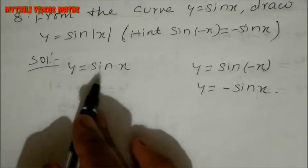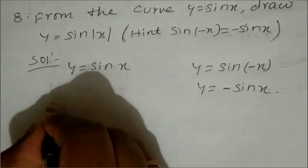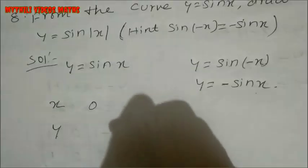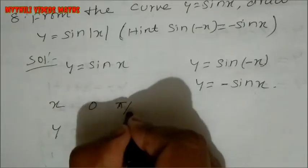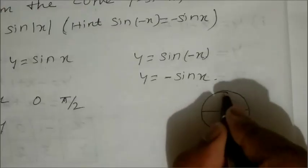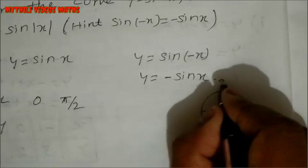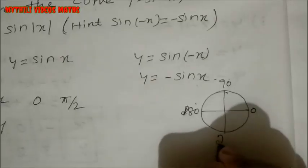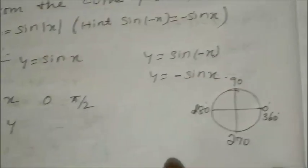So we set up the table. First the x-axis and y-axis. On the x-axis we start at 0, then go to 90 degrees, then 180, 270, and 360. We also mark these in radians: 0, π/2, π, 3π/2, and 2π.